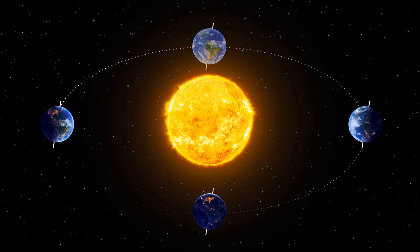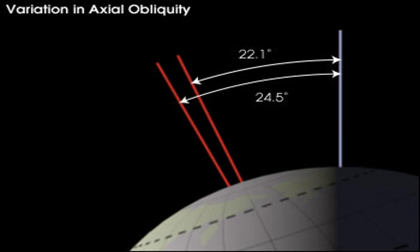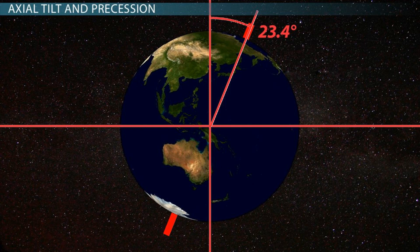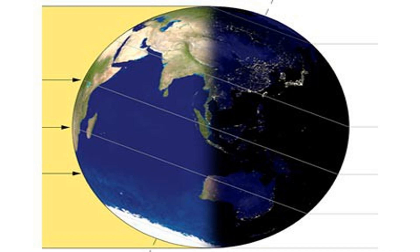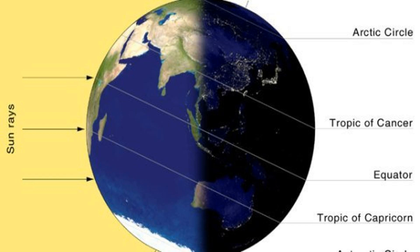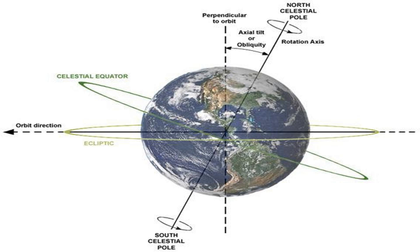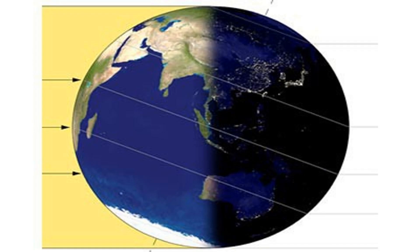As the Earth orbits the sun, the varying angles of axial tilt result in different amounts of sunlight reaching each hemisphere throughout the year. When a hemisphere is tilted towards the sun, it experiences summer, characterized by longer days, more direct sunlight, and warmer temperatures. Conversely, when a hemisphere is tilted away, it experiences winter, with shorter days, less direct sunlight, and cooler temperatures. The changing tilt angles as the Earth revolves around the sun are what bring about the mesmerizing cycle of seasonal transformations we observe year after year.